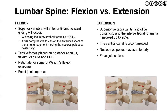With flexion, we get anterior tilt and forward gliding, which opens up the intervertebral foramina. It adds a component of compression to the anterior aspect of the disc, moving the nucleus pulposus more posteriorly. A tensile force is then placed on the annular fibers, the ligamentum flavum, the capsule, and the posterior longitudinal ligament. This opens up the intervertebral space — which serves as the rationale for what's known as Williams flexion exercises. Williams flexion exercises have been predominantly prescribed for individuals dealing with spinal stenosis, because widening that intervertebral space decreases some of the compressive forces at the facet joints, postulated to help alleviate symptoms associated with stenotic changes.